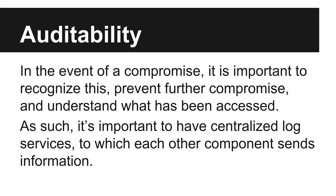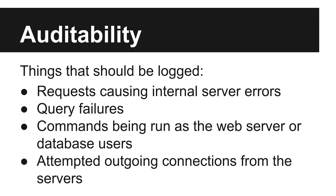Finally, and possibly most importantly, we need to discuss auditability. We need to be able to tell when a compromise happens, prevent that attacker from getting further into our system, and get an understanding of what they actually accessed. To do this, I recommend having a centralized logging system entirely separate from every other service on your network, which only gets incoming log messages from everything else. Access to this machine should be limited only to ultra-trusted members of your company, as this is one of the most critical pieces of your security infrastructure. You should be logging any requests that cause an internal server error, any failed queries, any shell commands running as the web server or database users, and any non-expected attempt to connect out from any of your servers. This is a minimal list, but even just logging these few things can greatly increase your odds of catching and shutting down attacks.